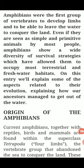The subject is animal diversity and comparative anatomy of the vertebrates, and now we will discuss about the origin of the amphibians or the origin of the tetrapods. Amphibians were the first group of vertebrates to develop limbs and to be able to leave the water to conquer the land. Even if they are seen as simple and primitive animals by most people, they show a wide diversity of survival strategies which have allowed them to occupy most terrestrial and freshwater habitats. On this entry, we will explain some of the aspects related to their evolution, explaining how our ancestors managed to get out of the water.